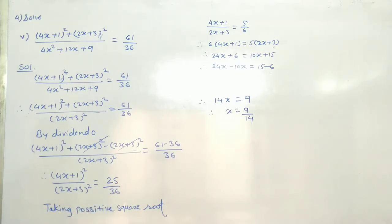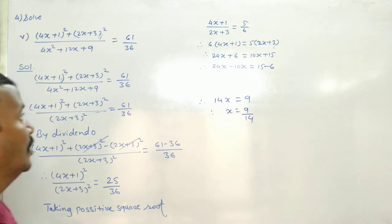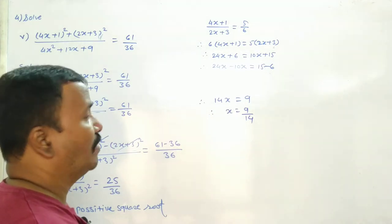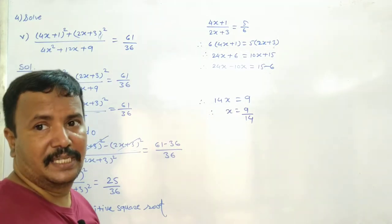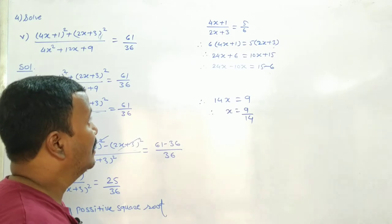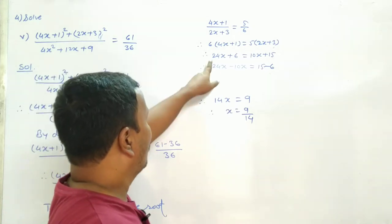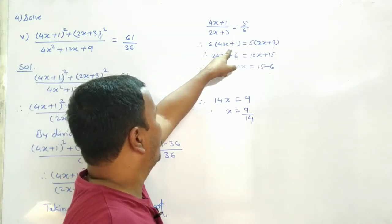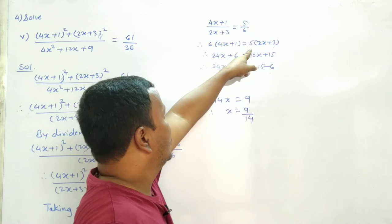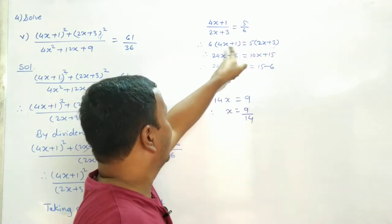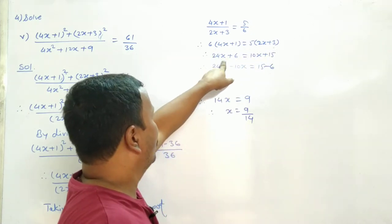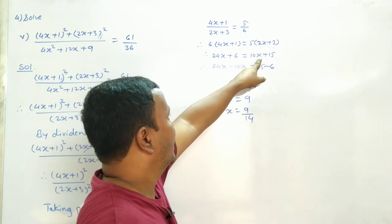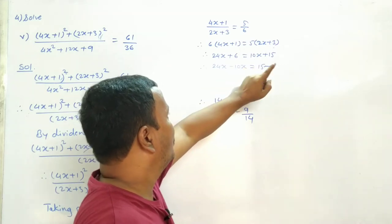Taking positive square root: (4x+1) upon (2x+3) is equal to 5 upon 6. Now cross multiply here: 6 into (4x+1) is equal to 5 into (2x+3), giving 24x + 6 equals 10x + 15.